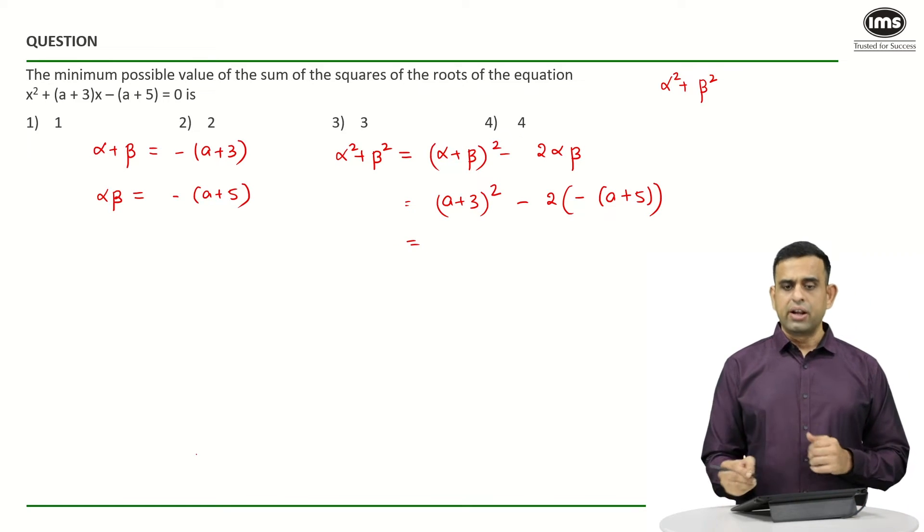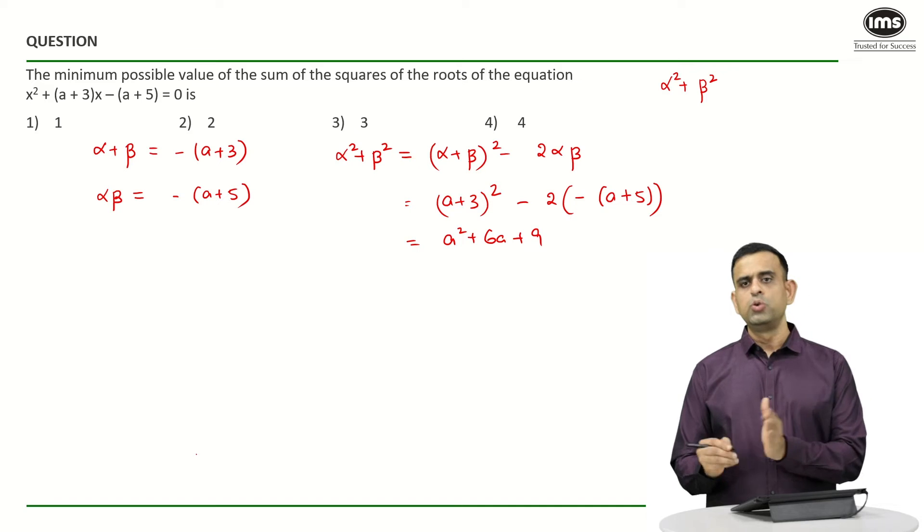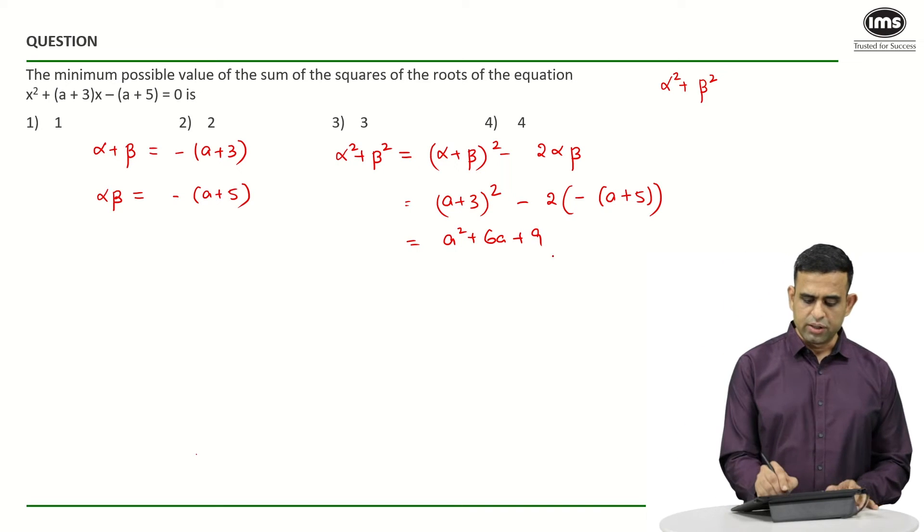If I now open the bracket, I will get a² + 6a + 9, and this thing is going to become plus 2 times (a+5), giving us plus 2a + 10.